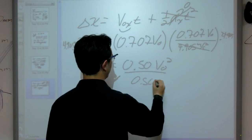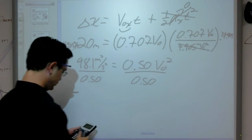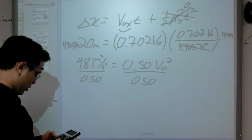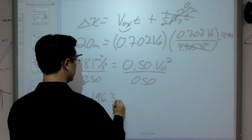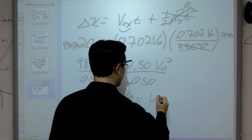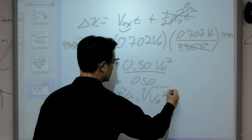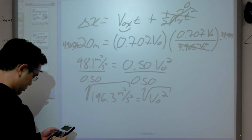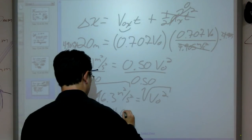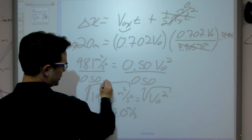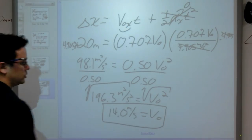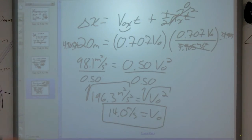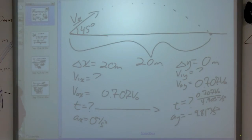Dividing both sides by 0.50: 98.1 divided by 0.50 equals approximately 196.3 meters squared per second squared, which equals v-naught squared. Taking the square root of both sides gives v-naught equals 14.0 meters per second — meters squared per second squared under a square root becomes meters per second, which is correct for a velocity. So sometimes problems get a lot messier. Normally we're looking for the range, but if I give you the range, we can backtrack and find other information like the initial velocity.